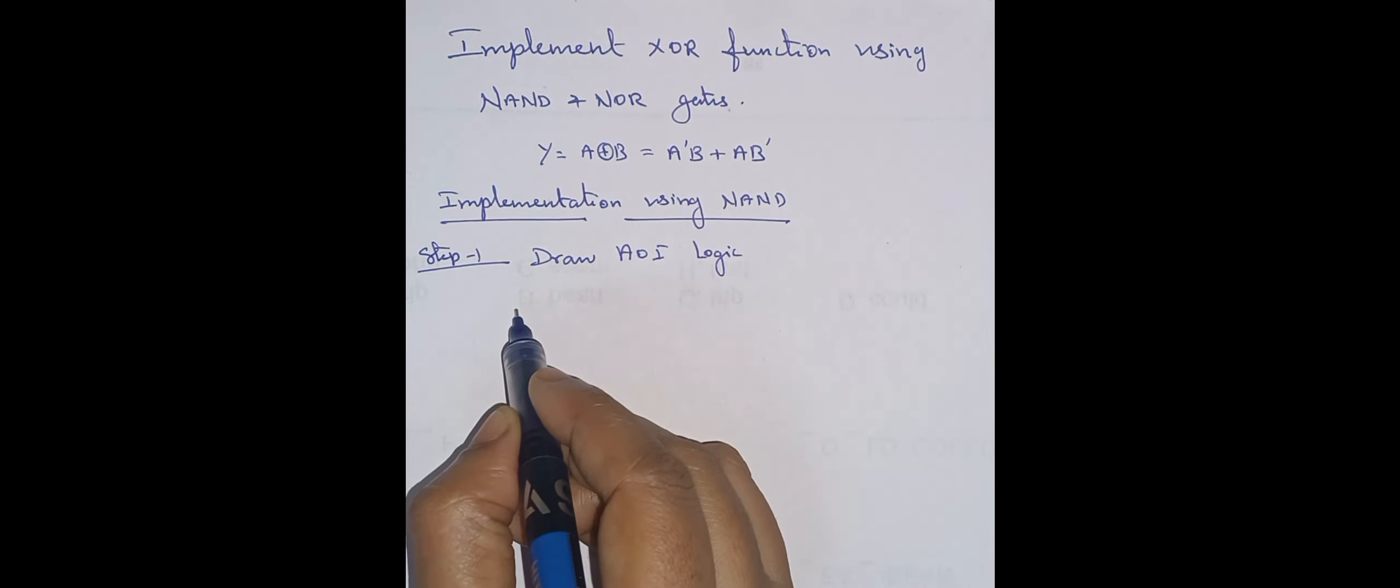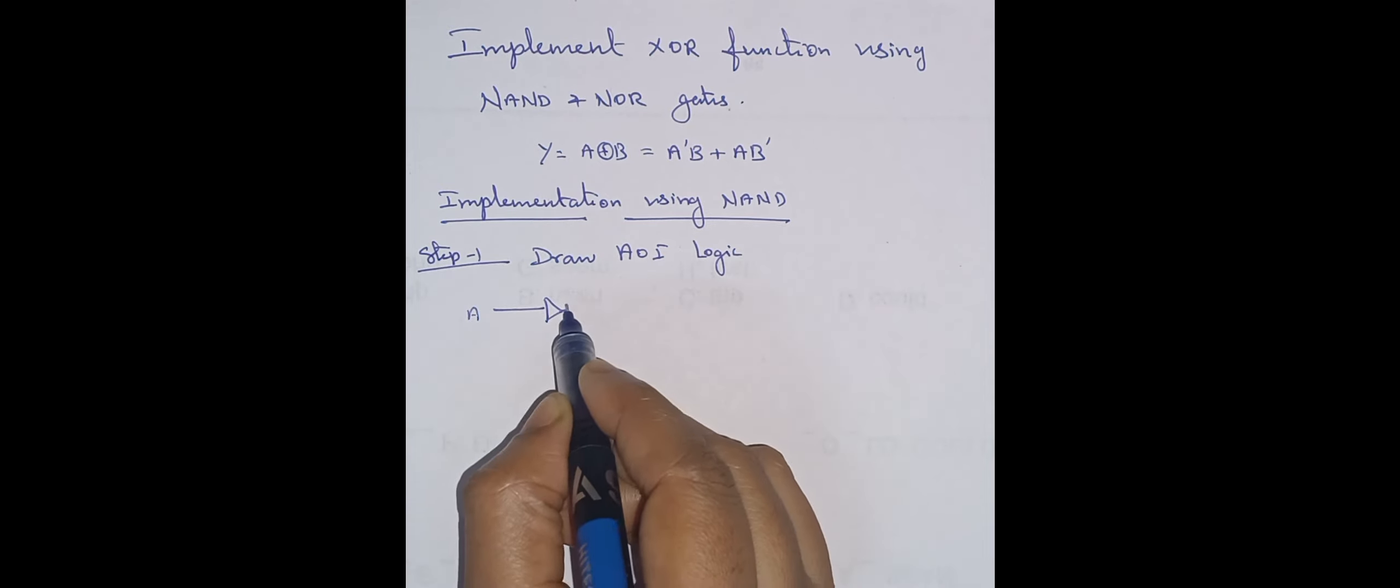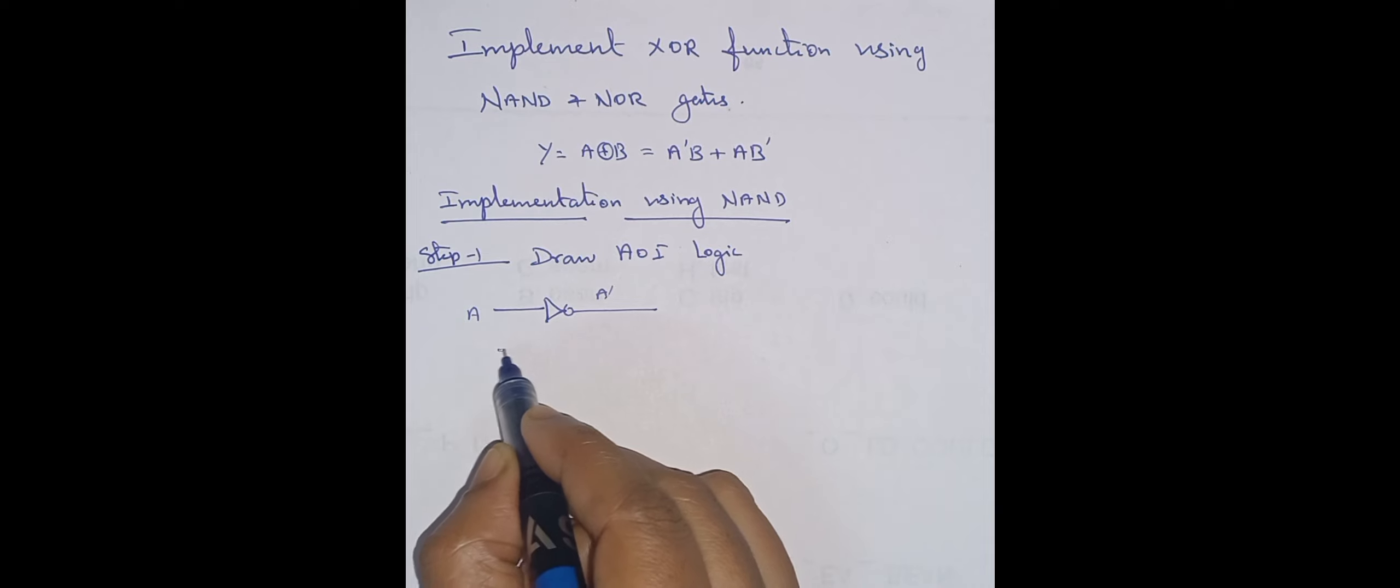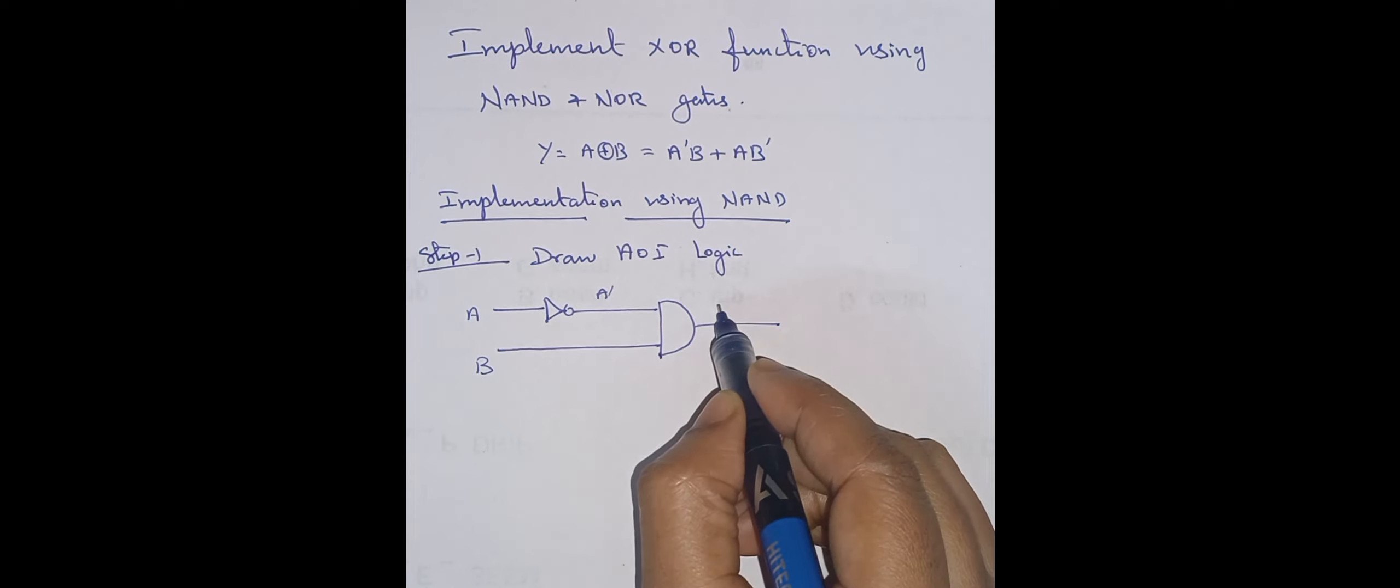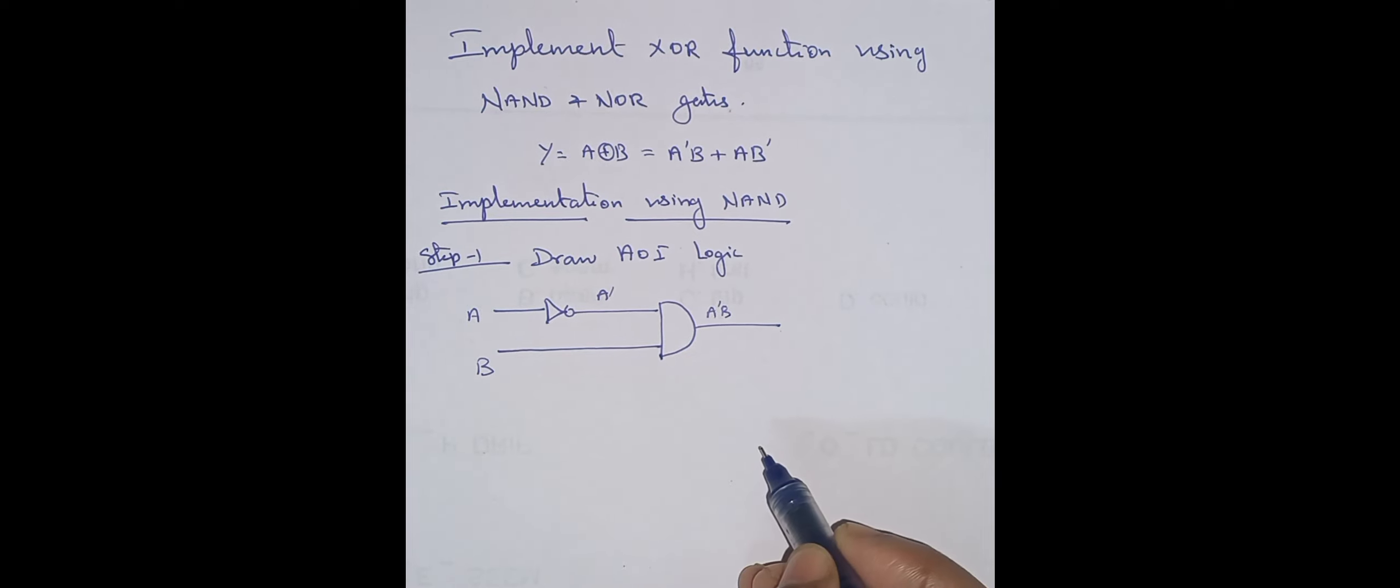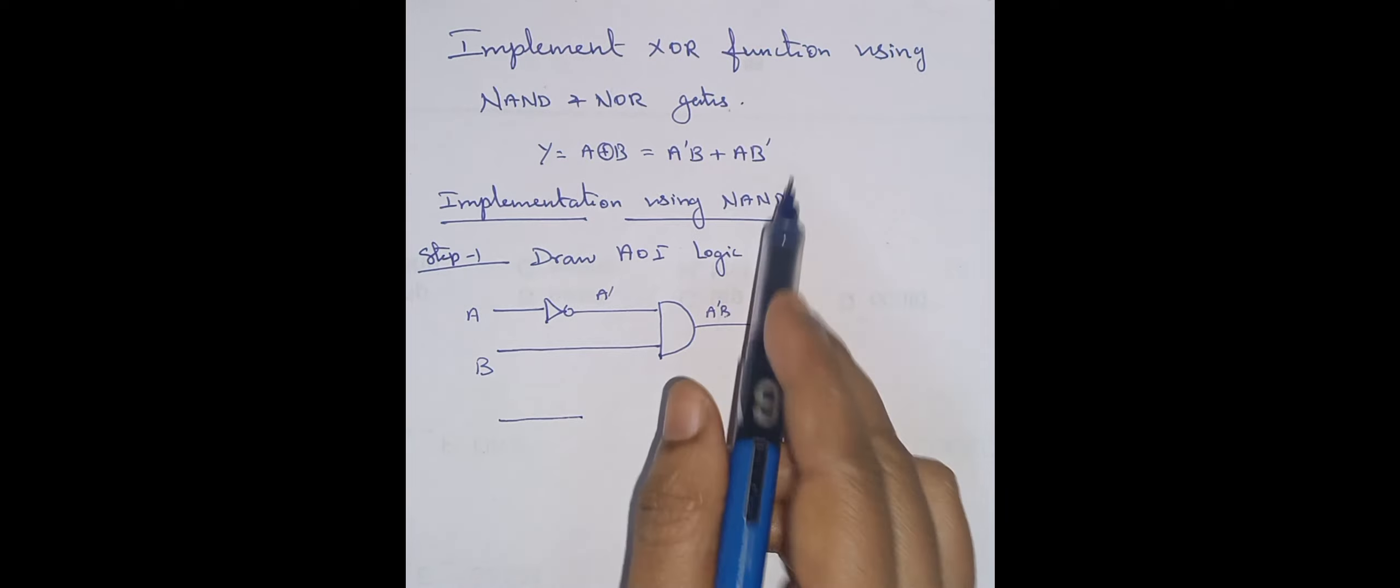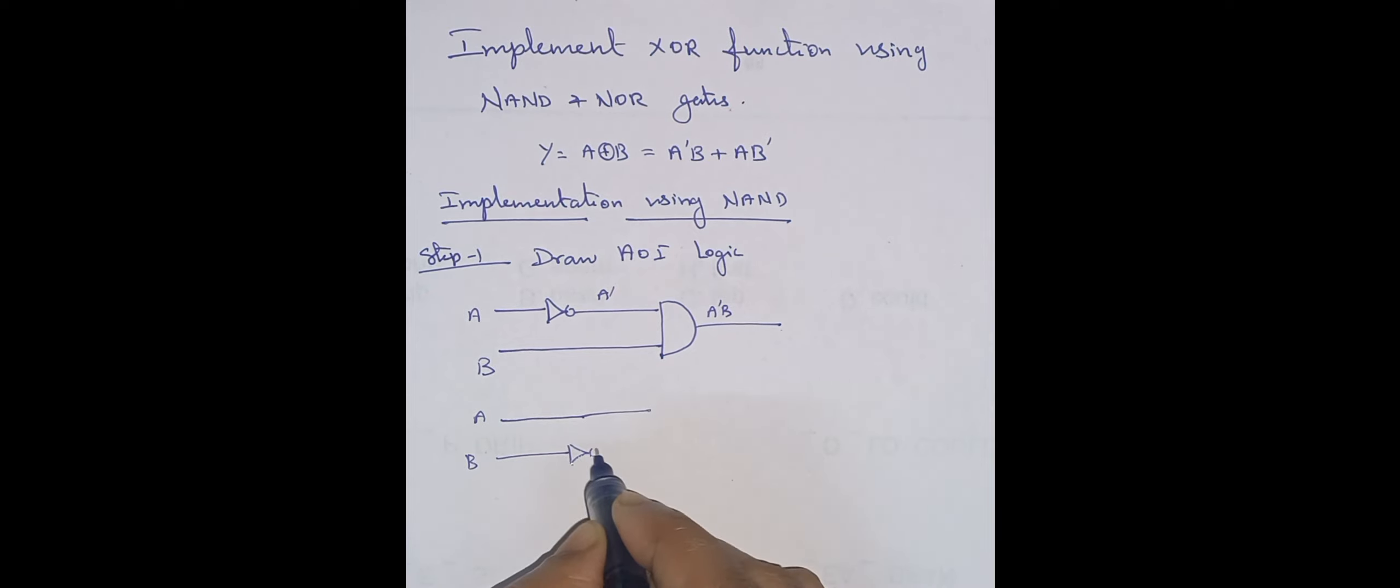First A dash B. So A, let it be A. The output of this one is A dash. Then the another input is B. Both variables are given to the AND gate so that the output will be A dash B.